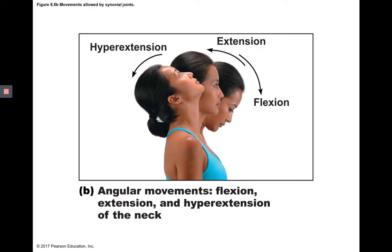For the head and neck: flexion means the mandible moves forward and gets closer to the sternum. Extension means moving the mandible away from the sternum. Hyperextension means moving the mandible even further from the sternum — all angular movements.